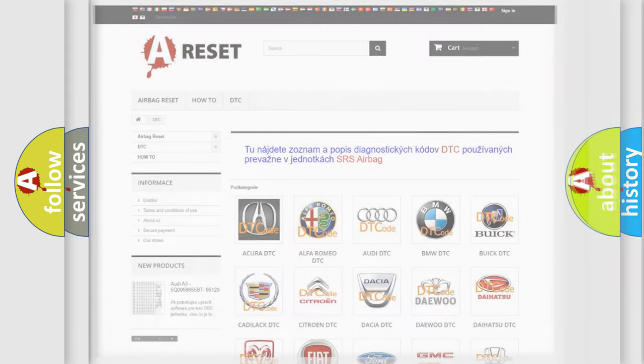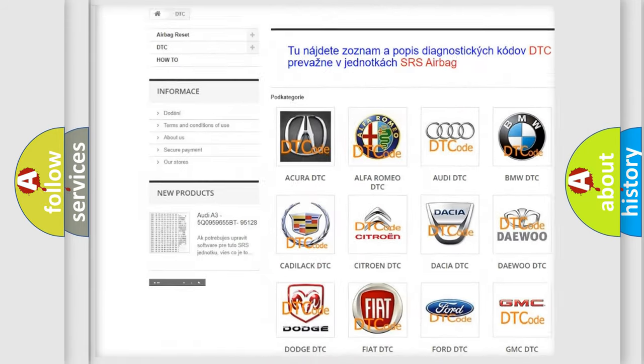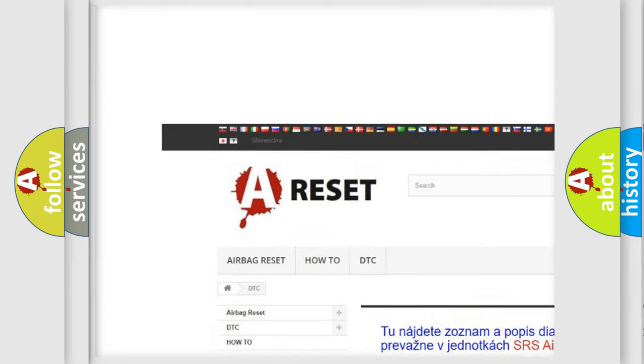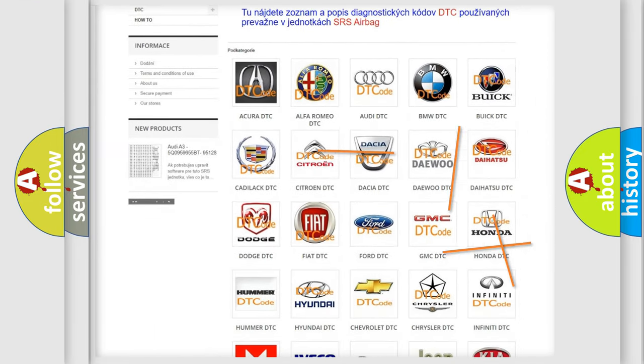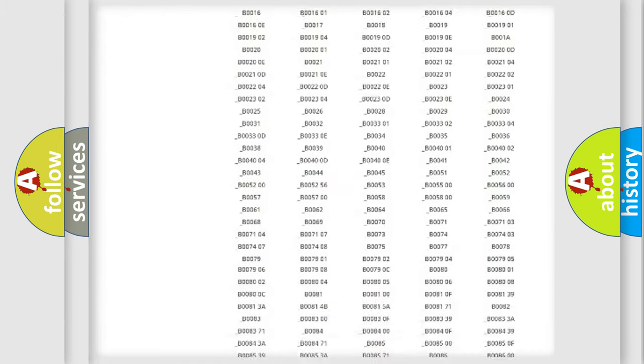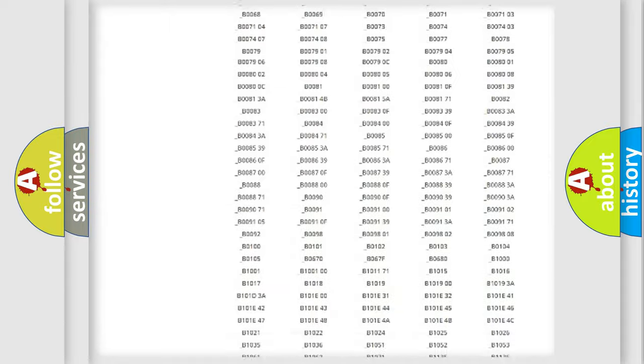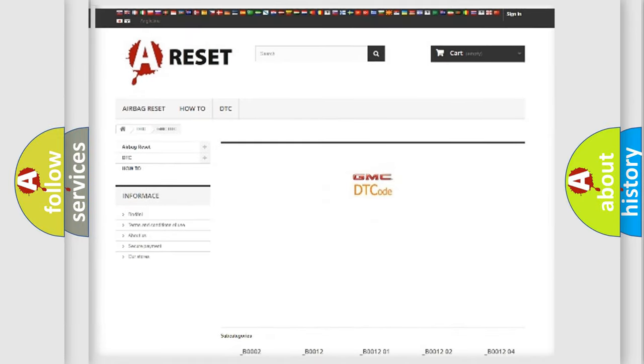Our website airbagreset.sk produces useful videos for you. You do not have to go through the OBD-II protocol anymore to know how to troubleshoot any car breakdown. You will find all the diagnostic codes that can be diagnosed in GMC vehicles.